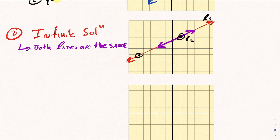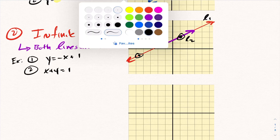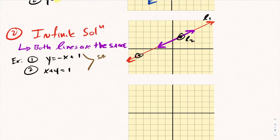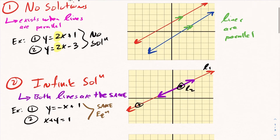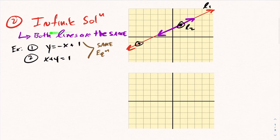An example of infinite solution: say equation 1 is y = −x + 1, and equation 2 is x + y = 1. It won't take long to realize these are both the exact same equation. And because they're the exact same equation, you're in a situation where you have infinite solution.